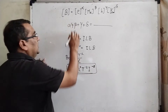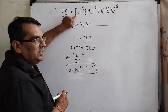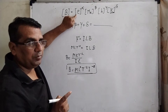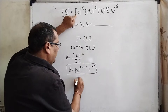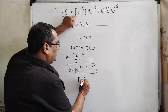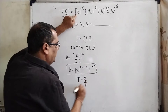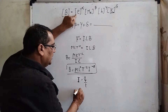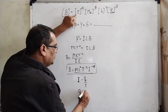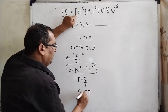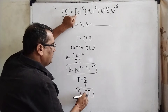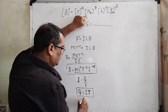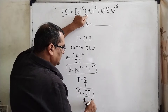For charge e: charge is a derived quantity. We know I = Q/T, and since I and T are fundamental units, charge Q = I × T. So the dimension formula of charge is [e] = I T.